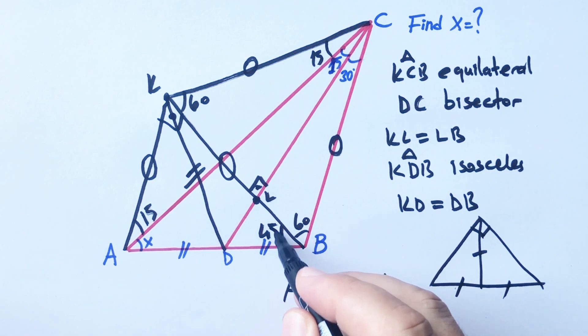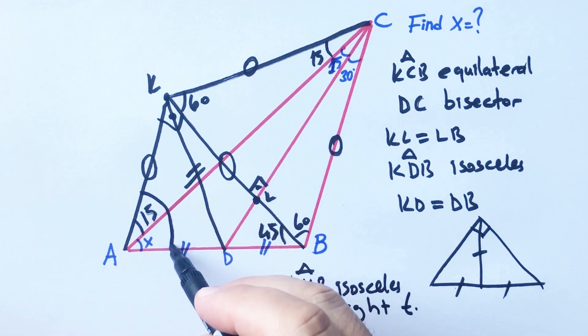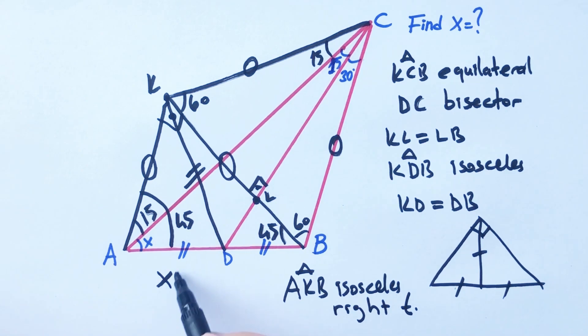So here must be 45 degrees, here must be 45 degrees, and here must be 45 degrees. Therefore, x plus 15 equals 45 degrees. X equals 30 degrees. Thanks for watching.